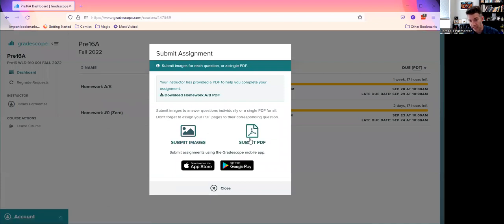And you're always going to want to submit a PDF, not images. So that's why you're using a scanner like Genius Scan so that you can submit a PDF. It'll create one PDF of your assignment, which is great. So I'm going to submit a PDF.